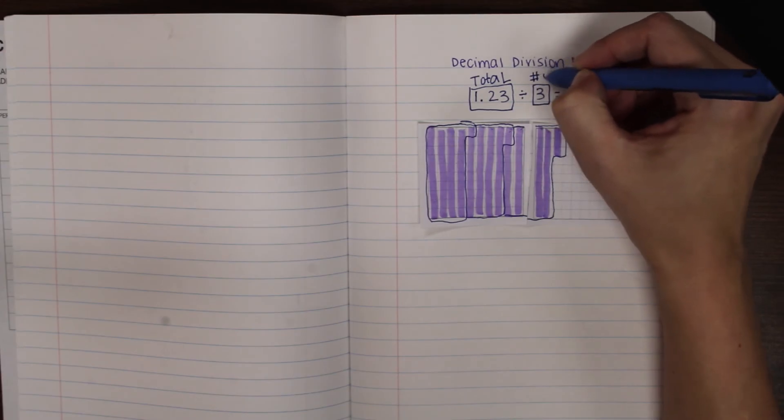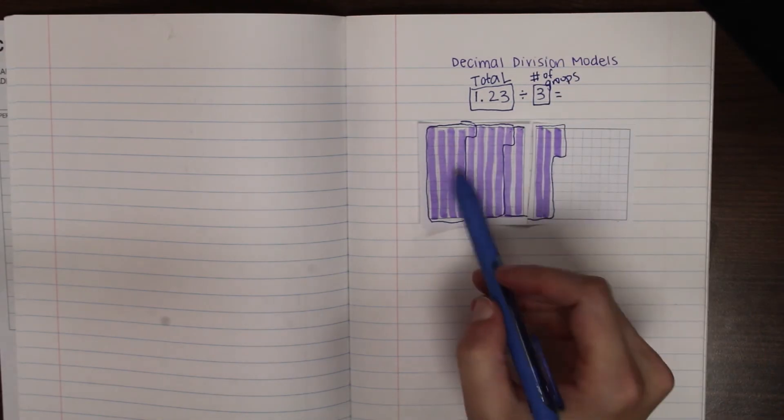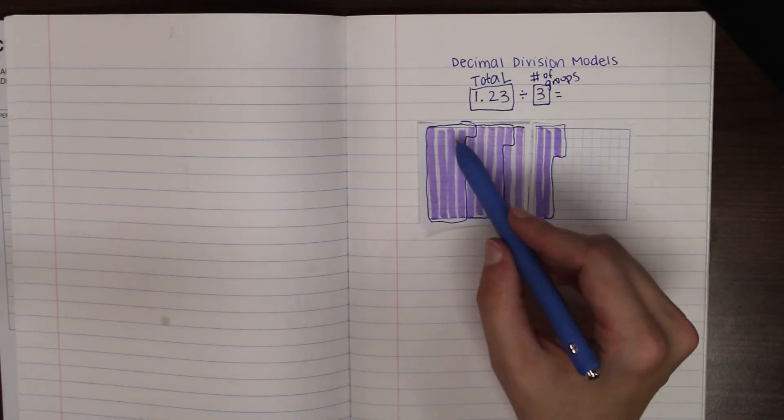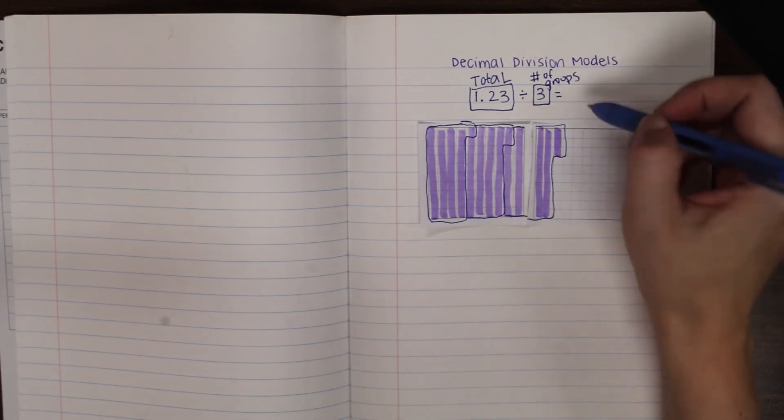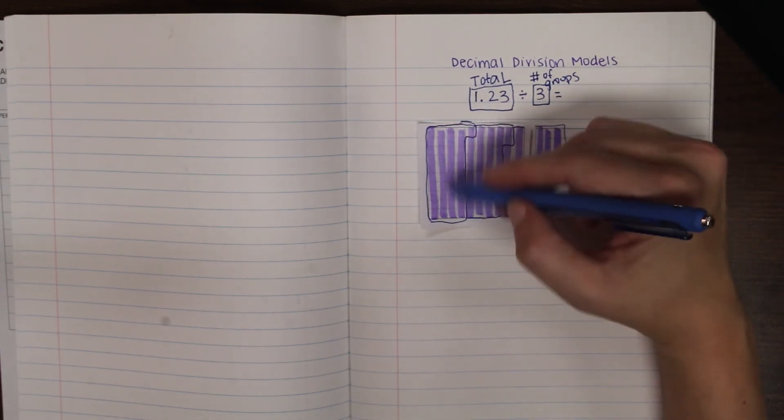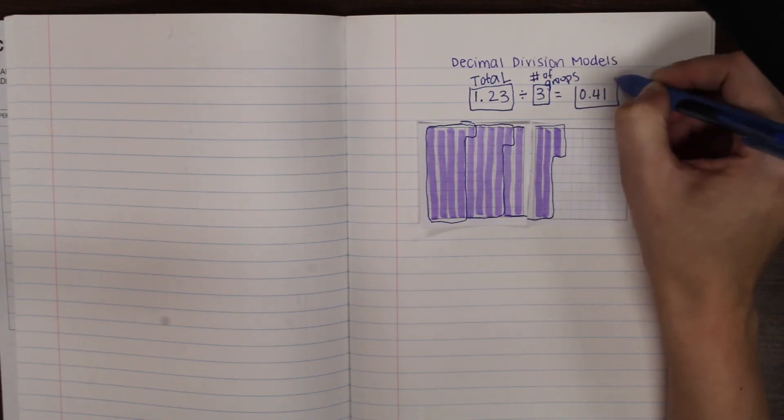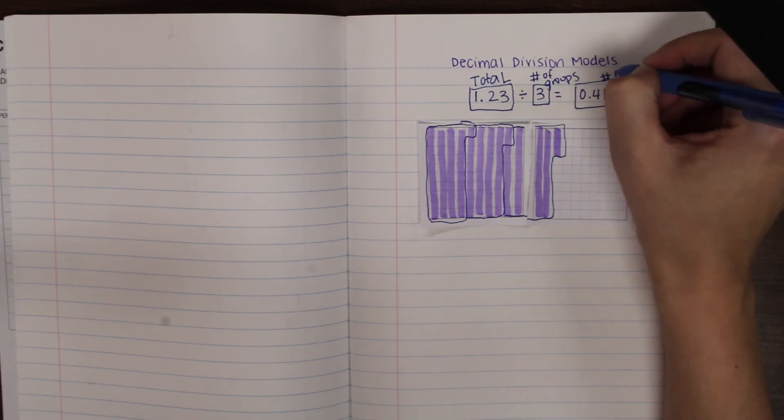So I have three groups here, and then the answer, the quotient, is always going to be the amount in each group. So since I know that there are 10, 20, 30, 41 hundredths in each group, that's my quotient. That's what I'll say. Number in each group.